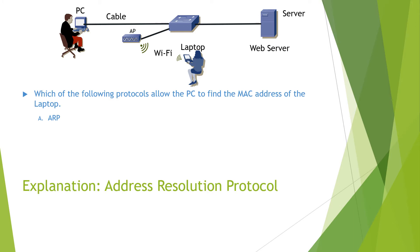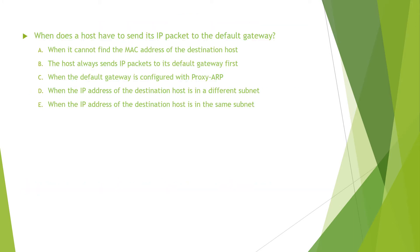Address Resolution Protocol. The question is: when does a host have to send its IP packet to the default gateway? The answers are: when it cannot find the MAC address of the destination host; the host always sends IP packets to its default gateway first; when the default gateway is configured with proxy ARP.